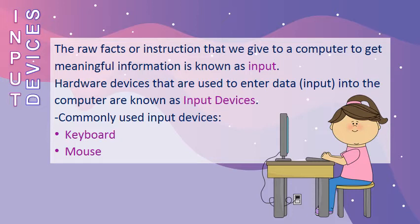You are familiar with the word 'in.' Now let us see what is input and what are input devices. The raw facts or instructions that we give to the computer to get back meaningful information is known as input. Input can be of different forms — it can be words, numbers, pictures, videos, or sounds.